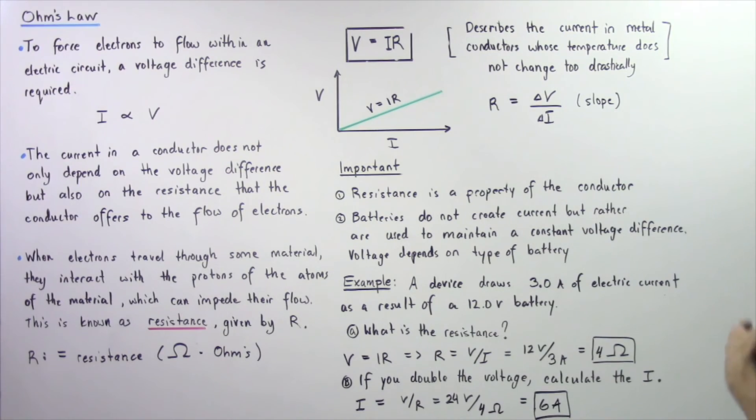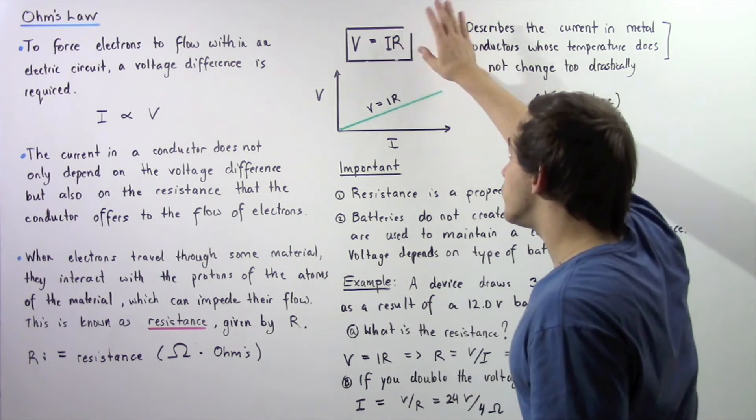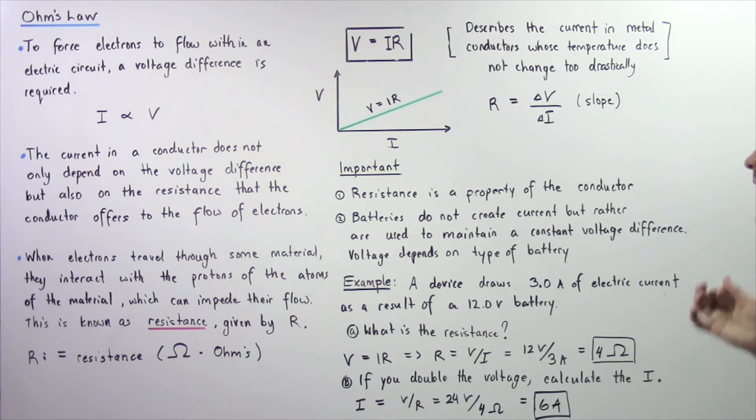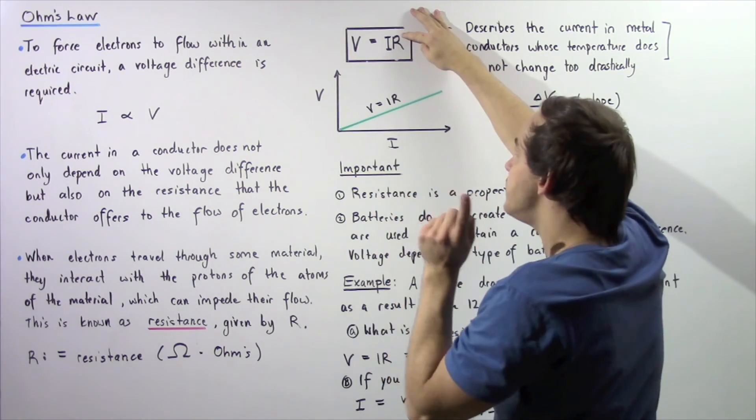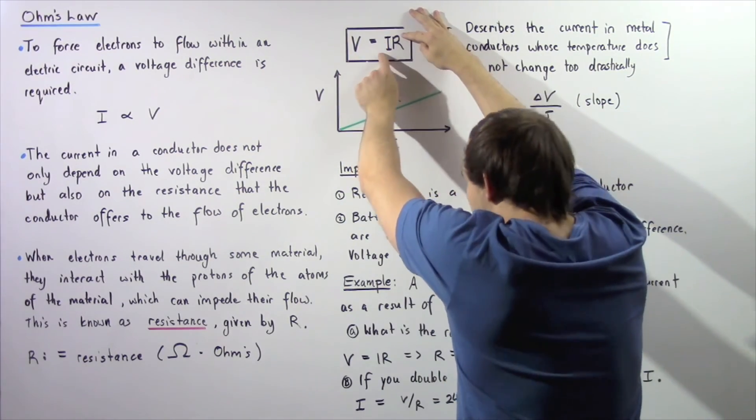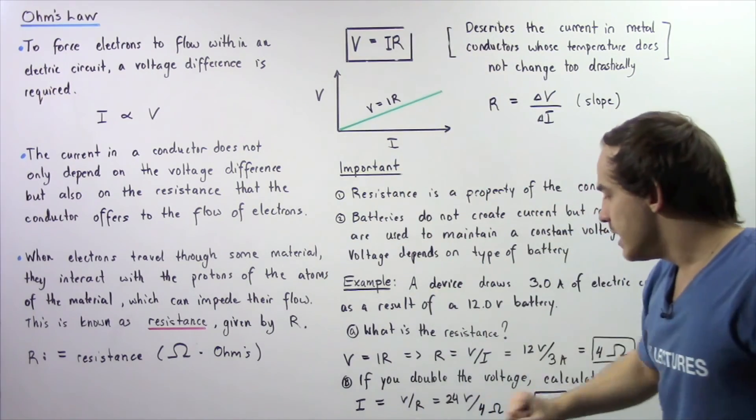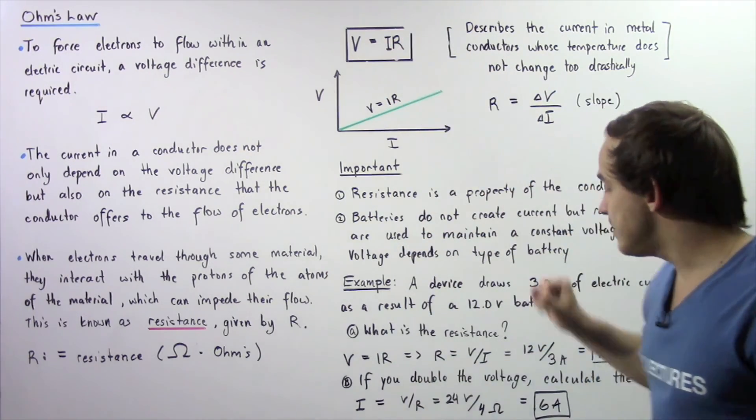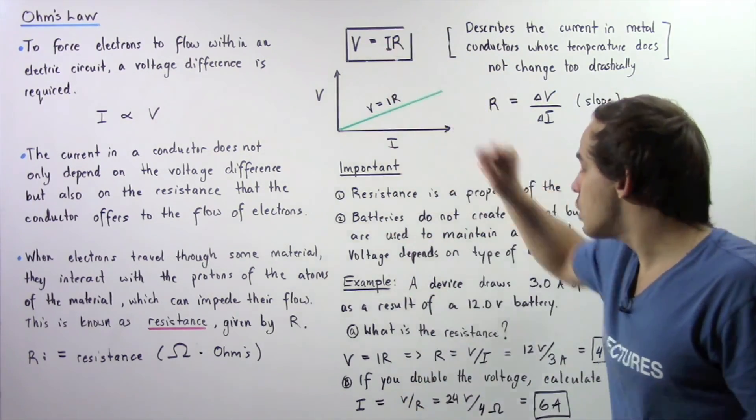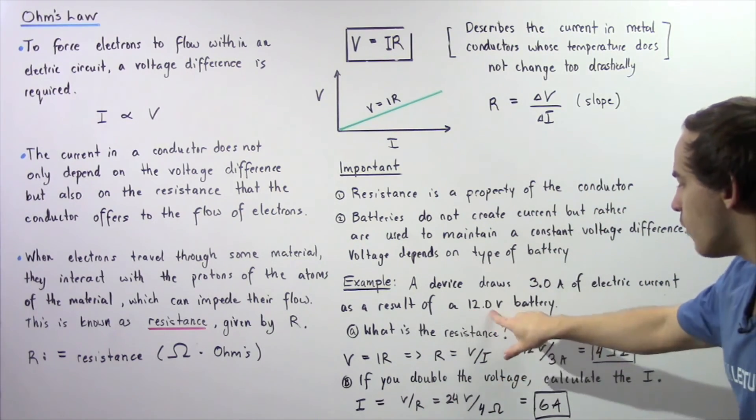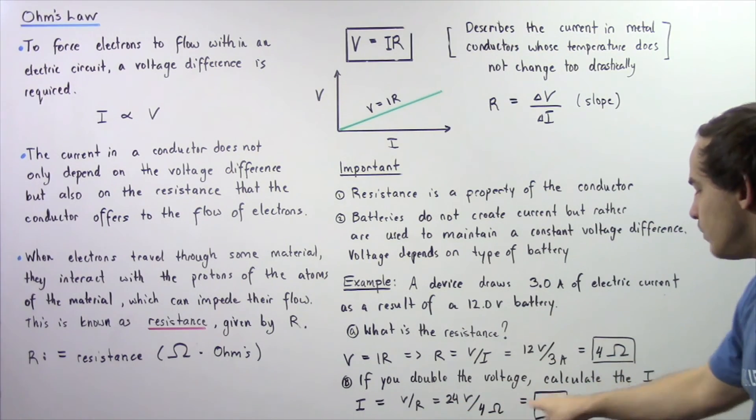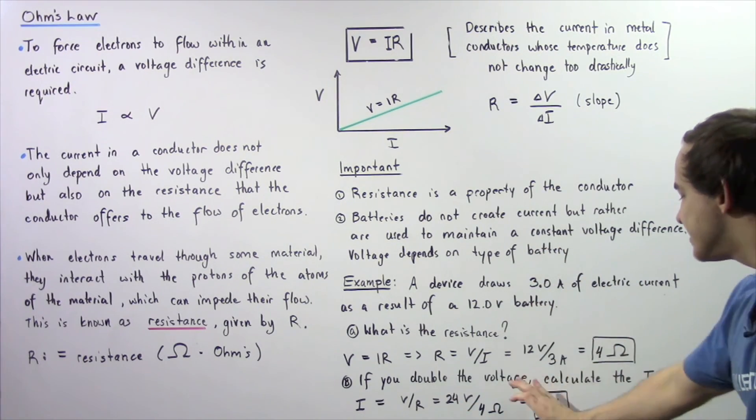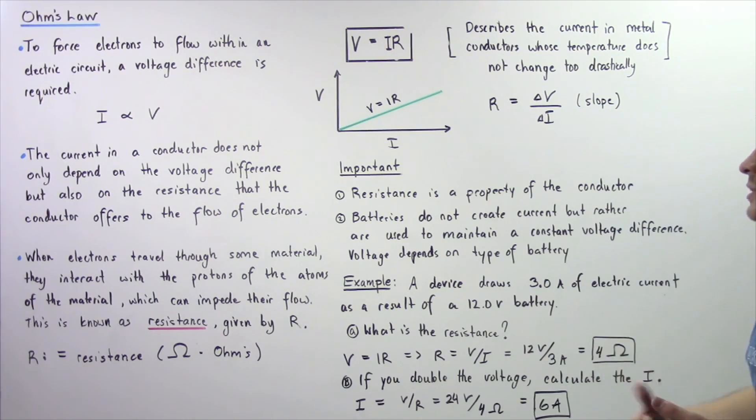In part B, if you double the voltage when R remains constant, what happens to our electric current? The R remains constant. We double this, so that means this must also double. Let's see if that actually works out. We see that I is equal to voltage divided by R. So we double our voltage from 12 volts to 24 volts divided by 4 ohms and we get 6 amps. So we go from 3 amps to 6 amps, so our electric current doubles.